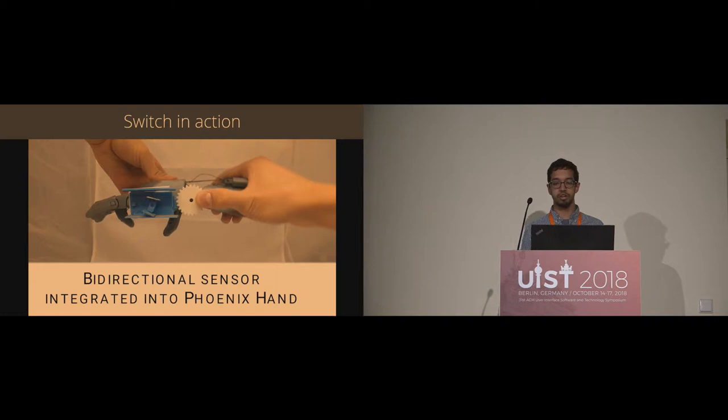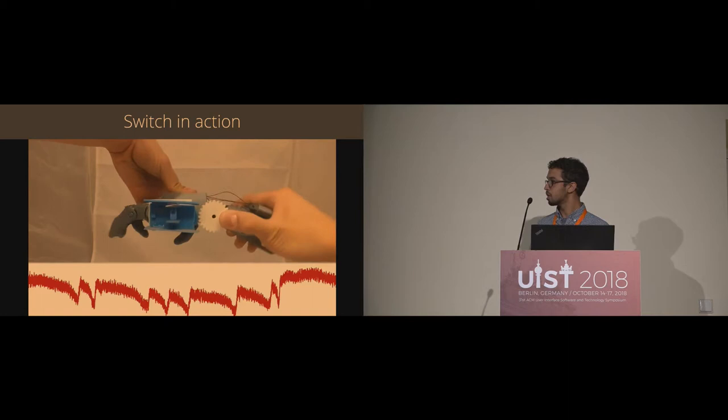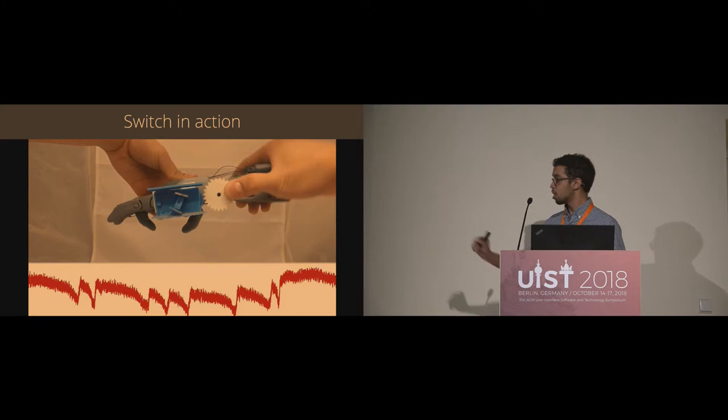So here's an example of our switch integrated with the Phoenix hand. And we can see here in this video that when we turn it, it moves either up and down and the switch contact is actually touching the antennas. Then at the bottom here, we have a plot of what our received radio signal looks like, where each of these little peaks in the signal corresponds to when the switch actually touched the antenna.